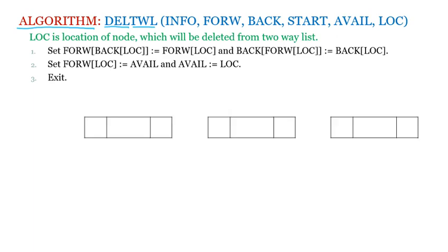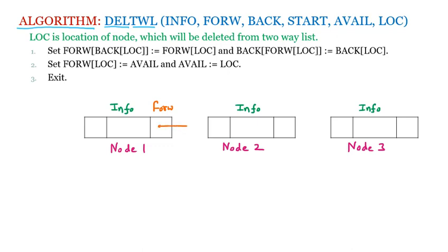We are taking the AVAIL list, and we have three nodes here: node 1, node 2, and node 3. Every node of the two-way linked list contains three parts: the info part (containing the information), the forward part (FORW), which contains the address of the next node, and the backward pointer. The AVAIL pointer points to the first node of the available list.